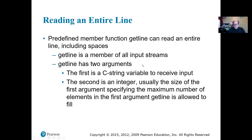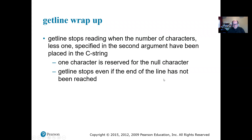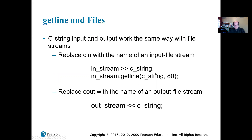We can also read the whole line. We already talked about getline with the string class — don't confuse it with this one; it's a little different. For a C string, getline is a member function of cin. One character is reserved for the null character, so we need to be sure we're going to have that backslash-0. Getline will stop even if the end of the line hasn't been reached, because we specify a number — it will either get the whole line or stop at that number.